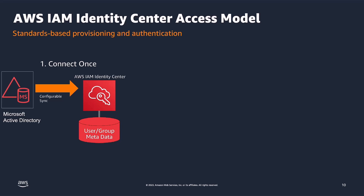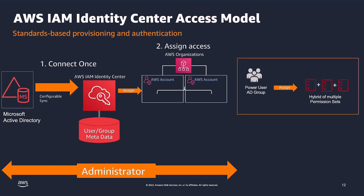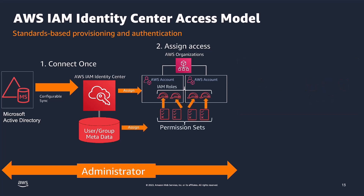Administrators can then assign predefined job function-specific permission sets in line with the Active Directory groups. For example, if there is an AD group for all sysadmins, administrators can assign the permission set System Administrator to the AD group. Additionally, there might be situations where administrators have to create a hybrid group which combines database access with sysadmin access. In such cases, administrators can combine the sysadmin and database permission set to create a hybrid group just like it exists inside Active Directory. Overall, administrators can centrally grant and revoke access to workforce at scale across multiple AWS accounts through permission sets.